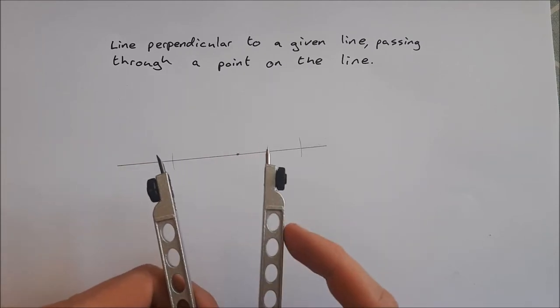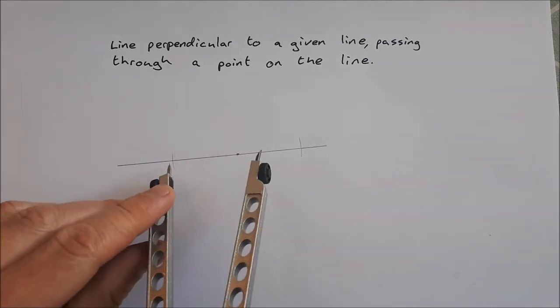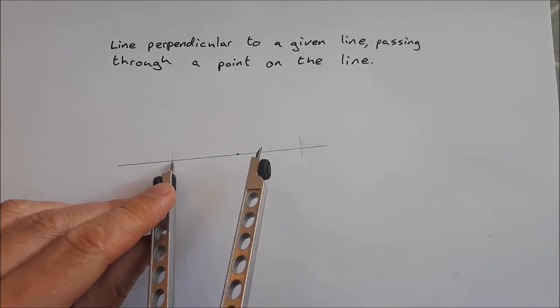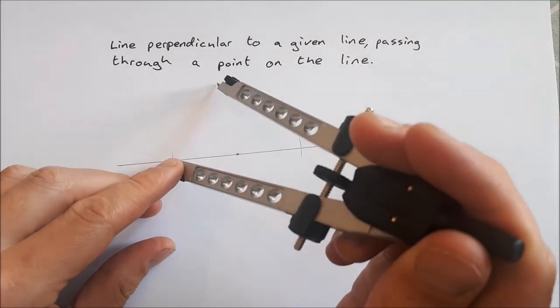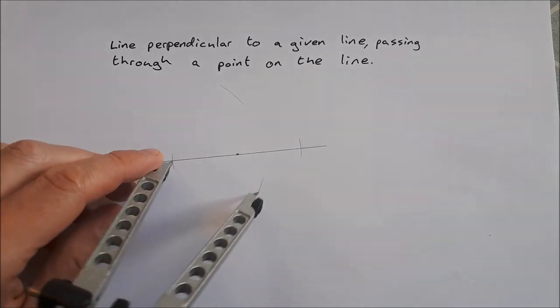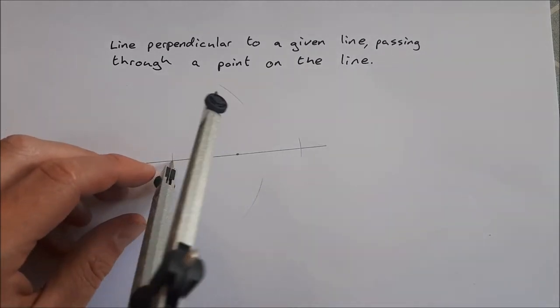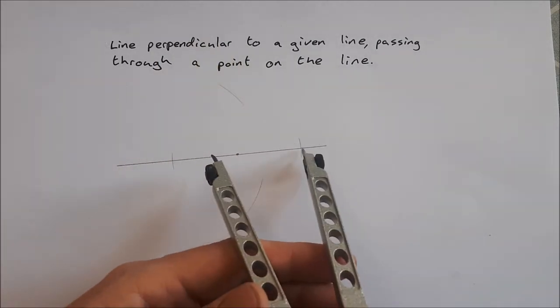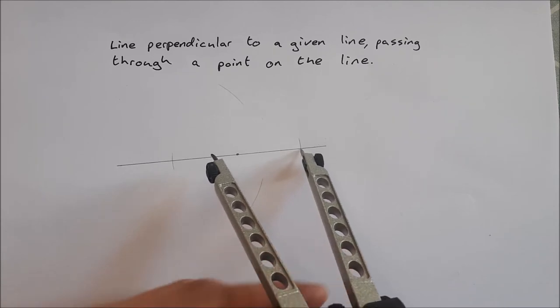Move your compass point to the point of intersection of the arc on the line and draw an arc above and below your line. Then move your compass to the opposite side and put the point on the point of intersection on the opposite side.